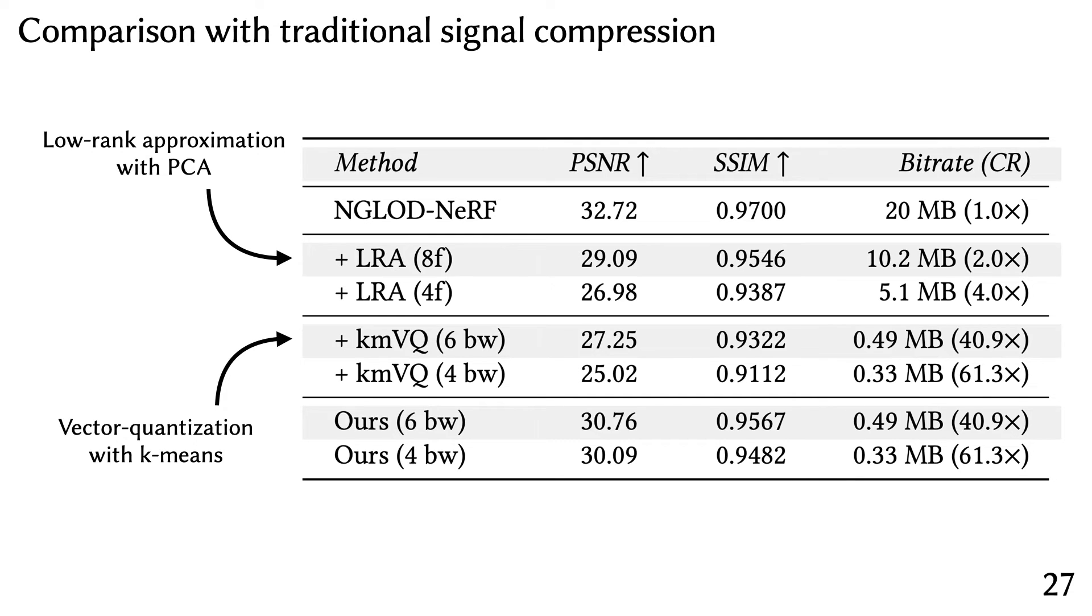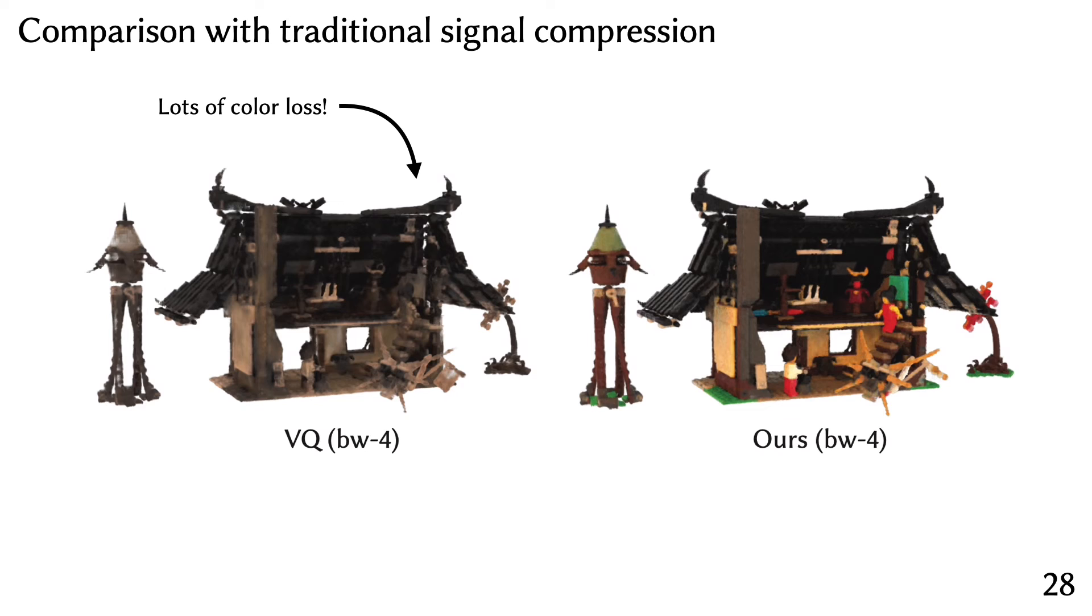As baselines, we perform low-rank approximation with PCA, which is similar to what transform codecs like JPEG does. We also compare against vector quantization using k-means, which is the non-end-to-end optimized equivalent to our method. Here, we show some qualitative results that show that vector quantization results in significant loss in the dynamic range of colors at equal size.